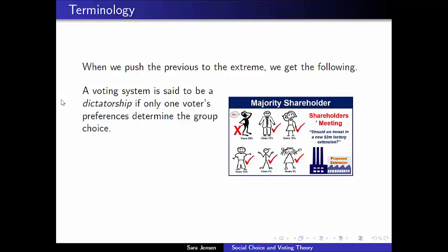A dictatorship is when there is one voter whose preferences are so strong that they actually determine the entire group choice, and it's not worth anyone else voting. You could see a system like this working in real life when you start talking about companies and their shareholders. When you have someone who has numerous shares in a company, they get more say than somebody who just has a tiny share in what happens to that company.